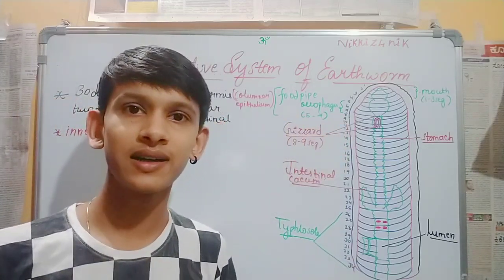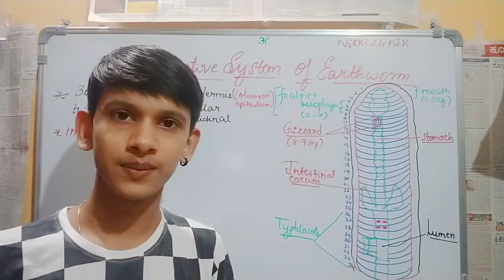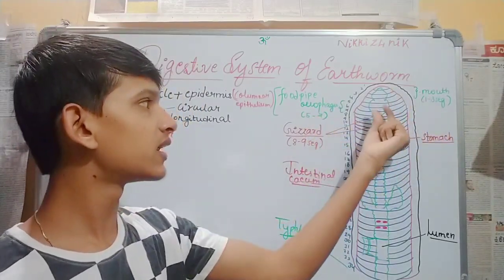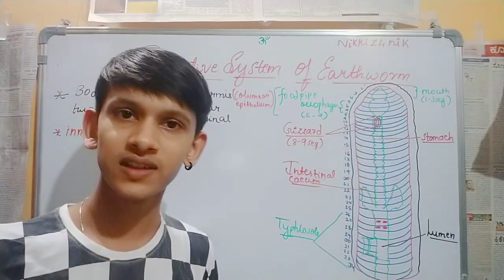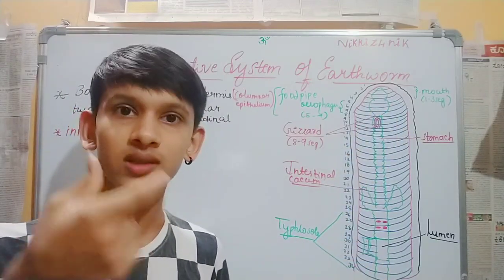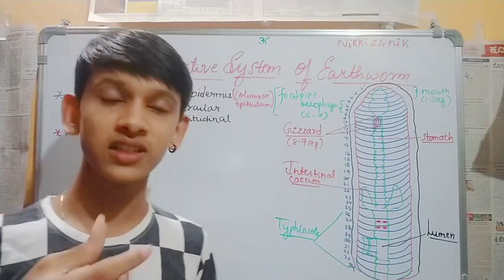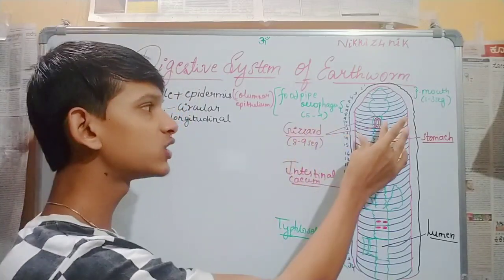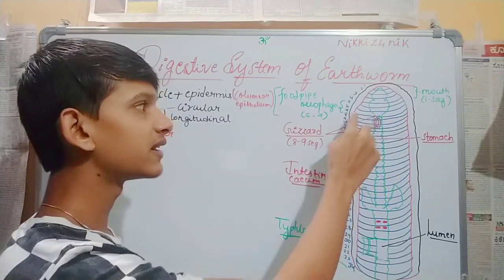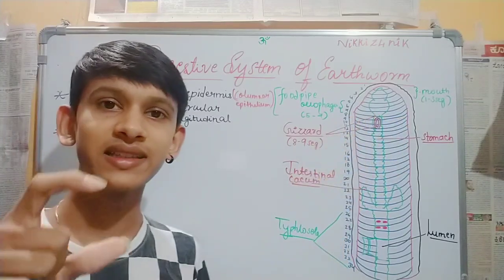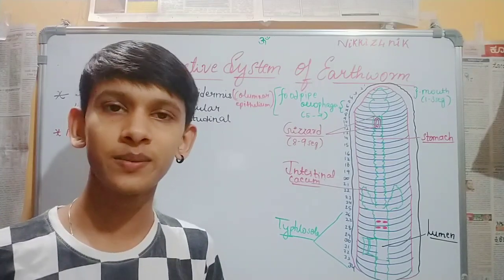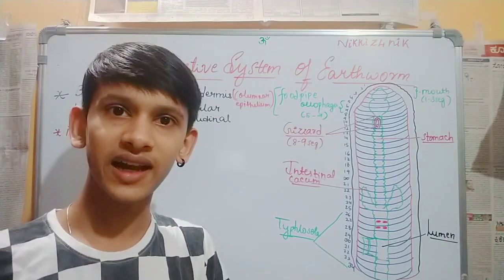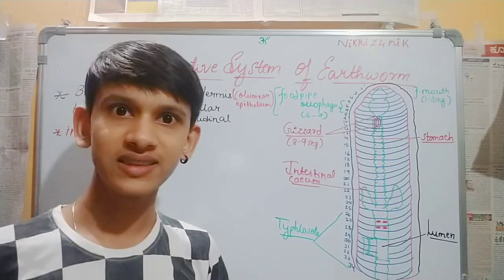You have to remember the organs in each segment. There is mouth, then pharynx, then esophagus. In the eighth and ninth segment, there is gizzard. The gizzard helps in grinding so that the earthworm can easily absorb food.